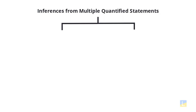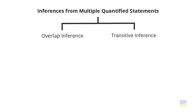I like to think of inferences from multiple quantified statements as falling into two categories: the overlap inference and the transitive inference. These categories are not necessarily mutually exclusive — there could be examples that fall into both — but it is helpful to think about these inferences in two different ways. Let's start with the first type: the overlap inference.